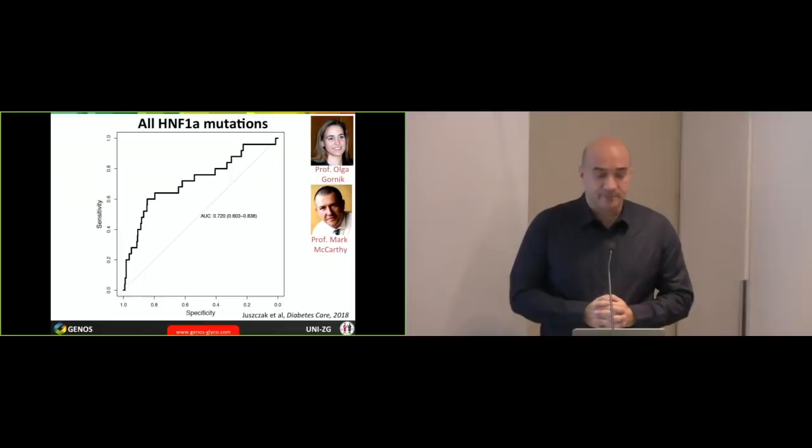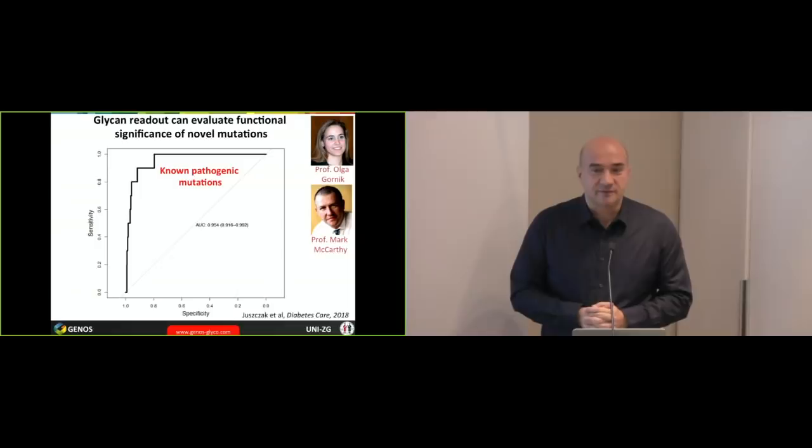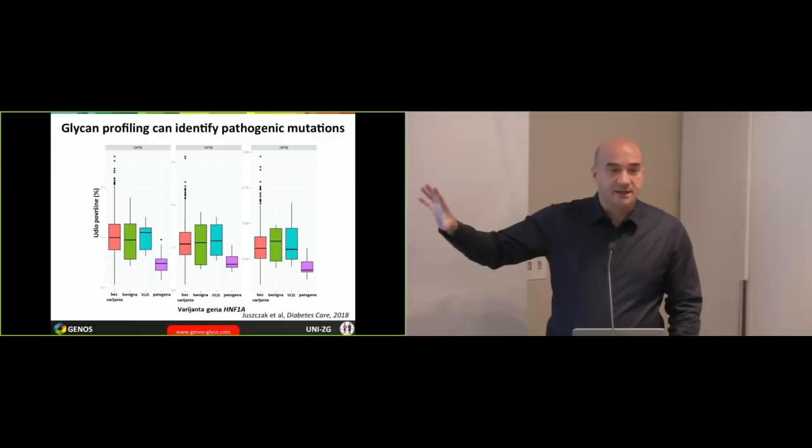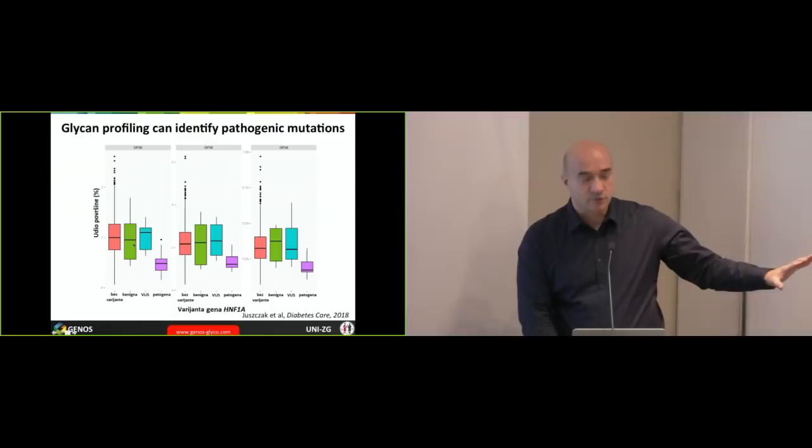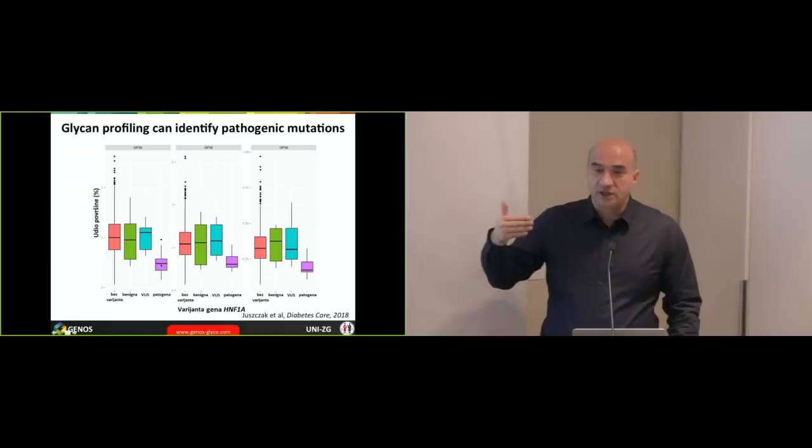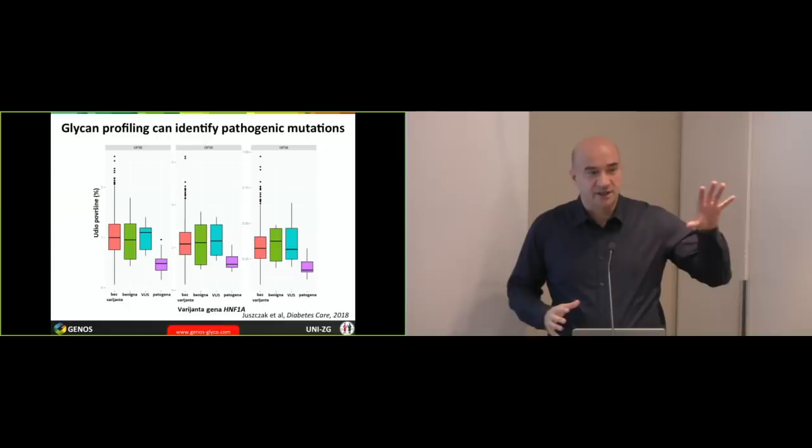But when we looked at the pathogenic mutations, glycans were really predictive. And actually, this opened up an entire new opportunity for the use of glycans. And this would be to identify the functional significance of mutations. Because most of the time when people sequence the gene, when they see a novel mutation, they have no idea how functionally relevant this is. And in this case, glycans can be a readout. So, this is the control. This is known irrelevant mutation. This was unknown mutation, which was later shown to be irrelevant. And these are the functionally important mutations. So, practically, we can use glycans as a readout to complement genetic sequencing to see which mutations actually change function of a protein.